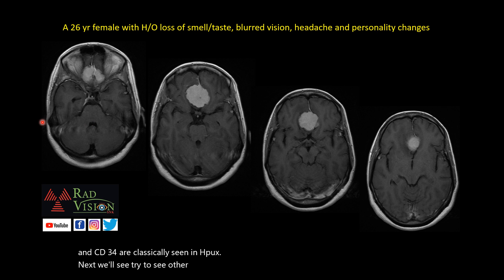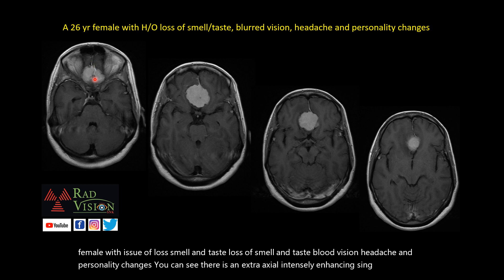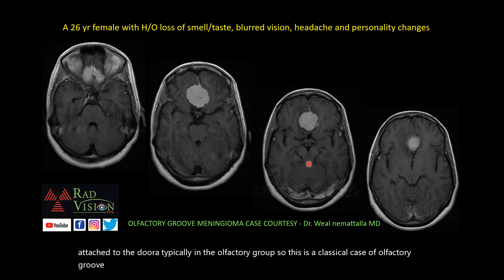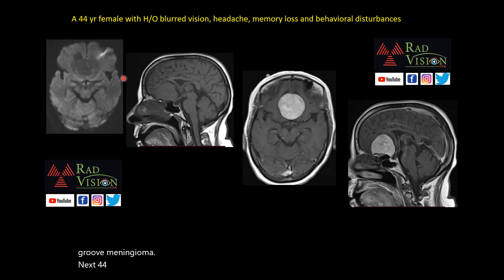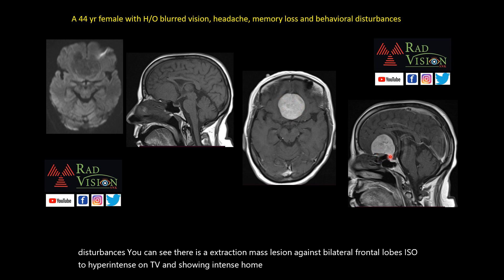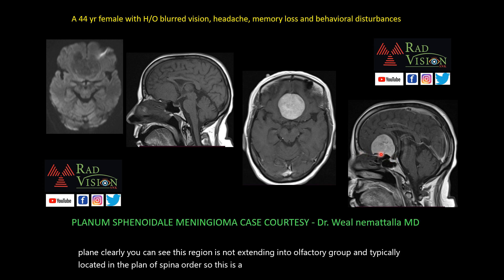A 26-year-old female with loss of smell and taste, blurred vision, headache, and personality changes: there is an extra-axial intensely enhancing mass lesion attached to the dura in the olfactory groove — a classical olfactory groove meningioma. Next, a 44-year-old female with blurred vision, headache, and memory loss: there is an extra-axial mass lesion against bilateral frontal lobes, iso- to hyperintense on T1 with intense homogeneous enhancement. On sagittal imaging, this lesion is not extending into the olfactory groove and is located in the planum sphenoidale — a classical planum sphenoidale meningioma.